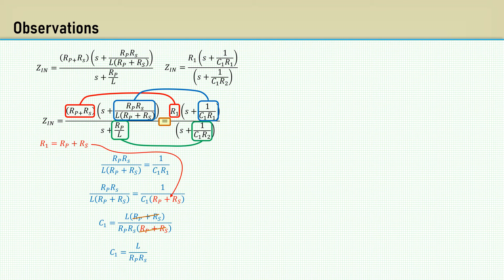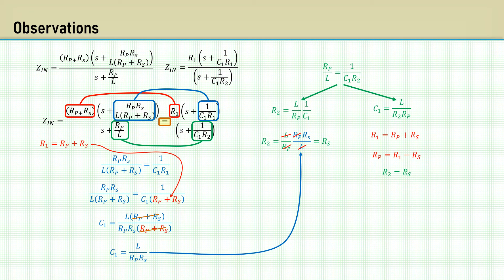Moving on to the denominator. In green, we can say Rp over L equals 1 over C1 R2. Rearranging to solve for R2. Then substituting L over Rp plus Rs for C1. All the terms cancel except for Rs. So R2 equals Rs. We can also take the equation above and rearrange to solve for C1. Recall that R1 equals Rp plus Rs. And therefore, Rp equals R1 minus Rs. We also concluded R2 equals Rs. Therefore, we can replace Rs with R2. Finally, replacing Rp with R1 minus R2 gives us the equation to solve for C1 based on the other chosen values. And the equation rearranged to solve for inductance.